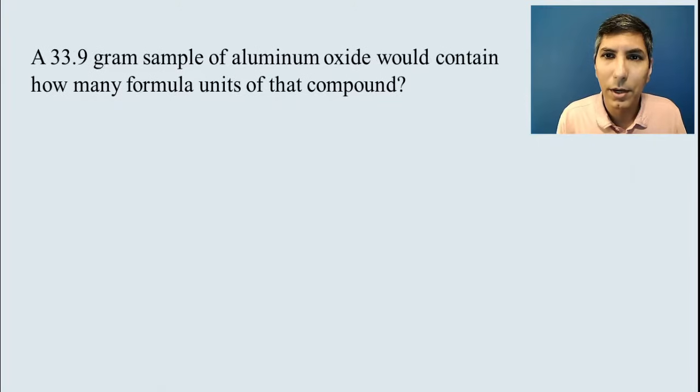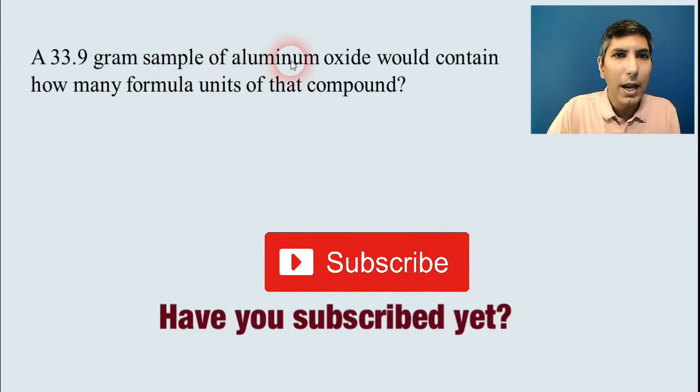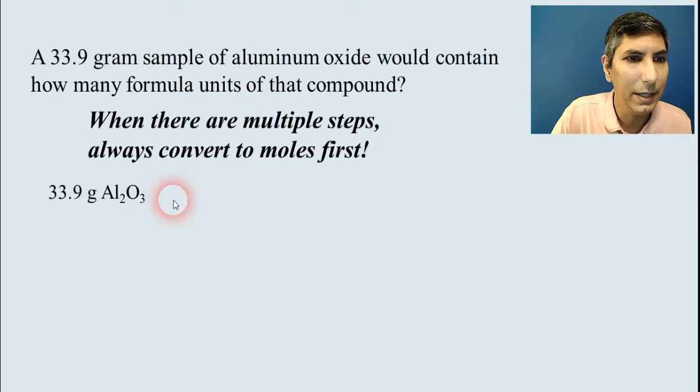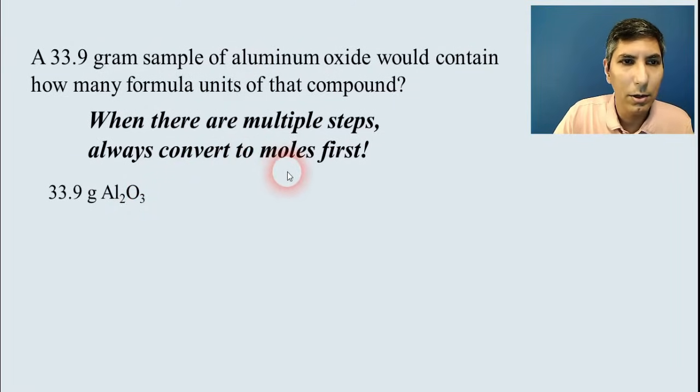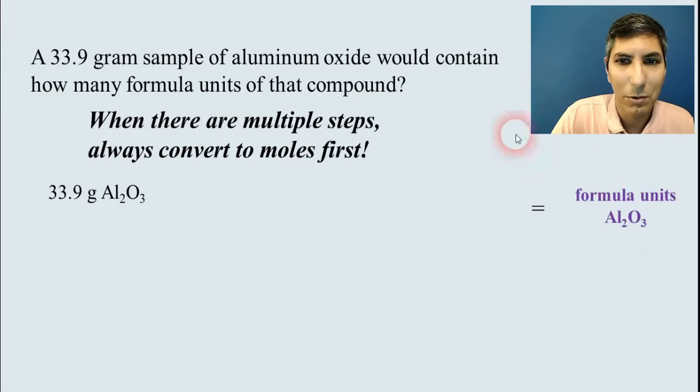Now, we're going to do some other conversions here with the mole concept. In this problem, we have a 33.9 gram sample of aluminum oxide, and the question is, how many formula units are we going to have here? We always start by writing down what's given to us, the 33.9 grams of aluminum oxide. And as you see here in the note, always convert to moles first. If you have multiple steps, convert to moles. Or like I sometimes say, all roads lead to moles.